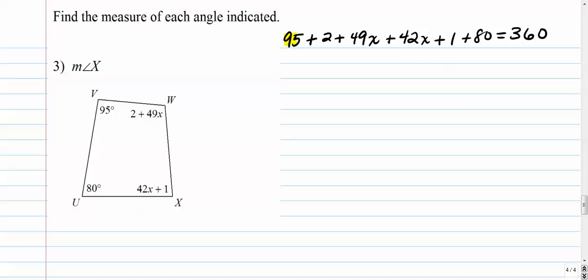So here we go. Combine constants. So everything that's a constant, which is this, this, and this, and this. Add those all together first. So we've got 97 plus 1 is 98. 98, it's 178 plus, now we're going to combine the like terms here. So we've got 49x plus 42x, that's 91x equals 360. I'm going to move the 178 to the other side by doing its inverse, which is subtraction. So I go 360 minus 178, and I get 182.